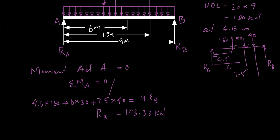Using the second equilibrium condition — summation of forces equals zero — RA plus RB must equal the sum of all applied forces, which is 250 kN. Therefore RA equals 250 minus 143.33, which gives RA equals 106.67 kN.